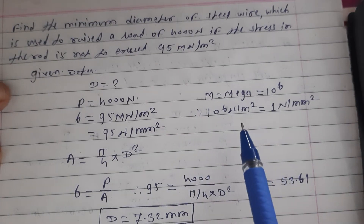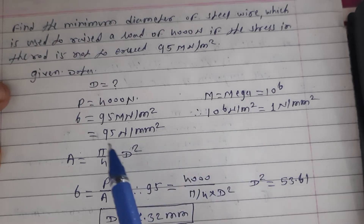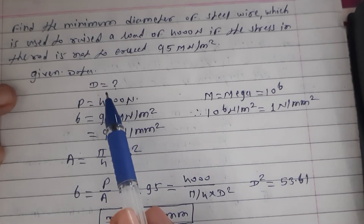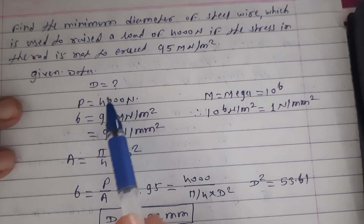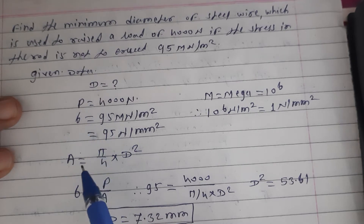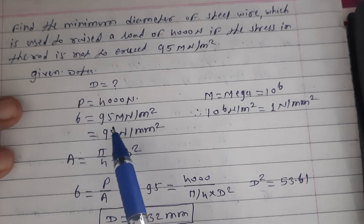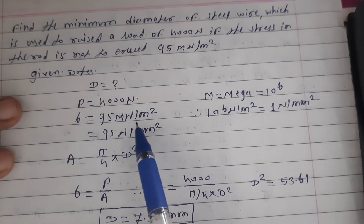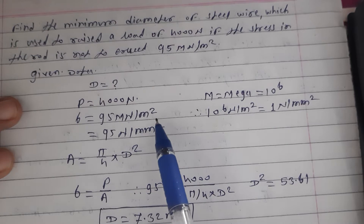What we want to find out? D — the diameter of the given wire. D is equal to how much? P is given, sigma is given as 95 mega newton per meter square.